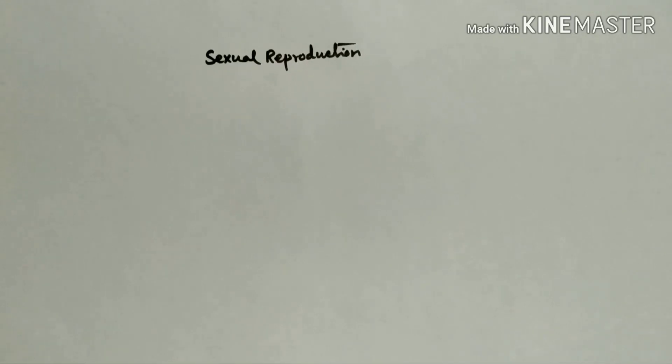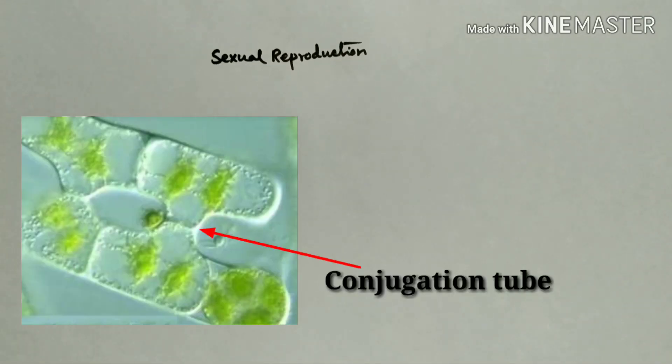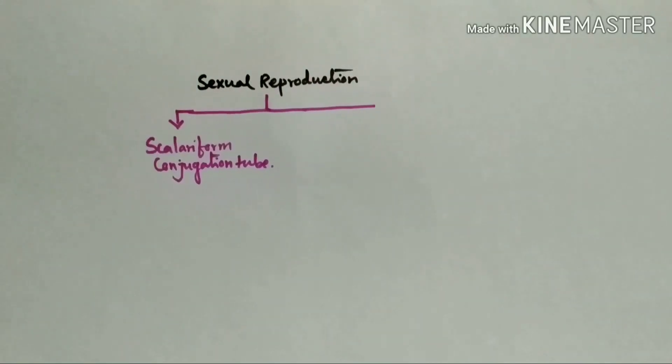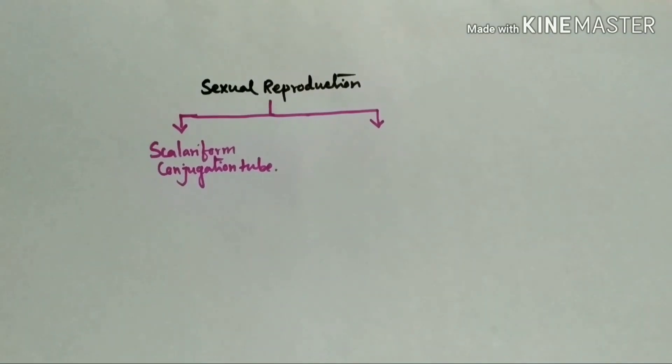Sexual reproduction in Zygnema: In Zygnema, sexual reproduction occurs by production of conjugation tube. There are two types: conjugation tube produces scalariform conjugation tube and another is lateral conjugation tube.